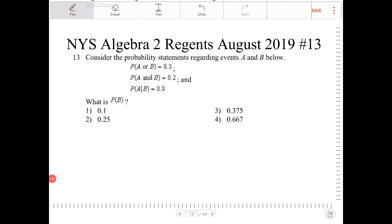Consider probability statements regarding events A and B below. You're given the probability of A or B is equal to 0.3, probability of A and B is 0.2, and probability of A given B is equal to 0.8. What is probability of B?